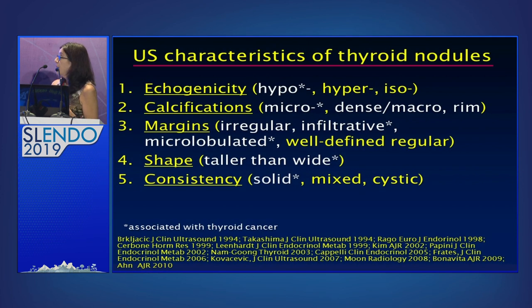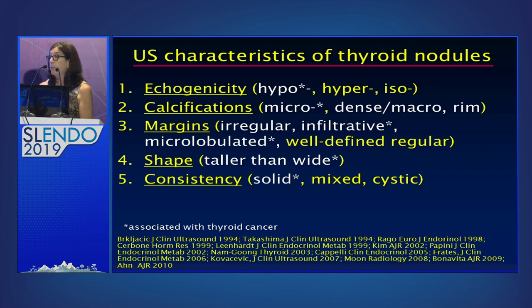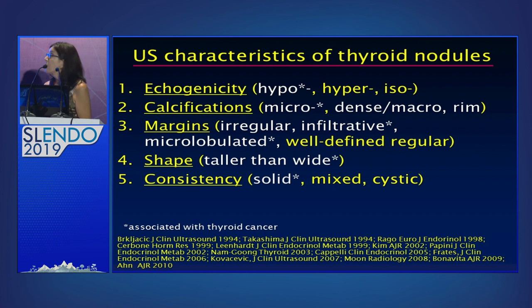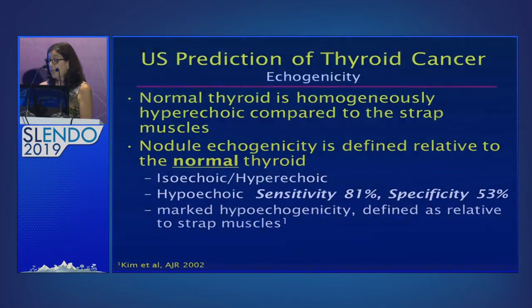So what I'm going to do is deconstruct the ultrasound images first to look at the individual features of thyroid nodules, and then we'll put them back together in some of the commonly used ultrasound schemes for classification of nodules. When we deconstruct and look at the five major characteristics of thyroid nodules that are reported, we talk about echogenicity — shown in white is the characteristic associated with malignancy. We'll also look at different calcifications or echogenic foci, how margins can look, what a taller-than-wide shape looks like, and nodules that have different ultrasound consistencies — solid or mixed.